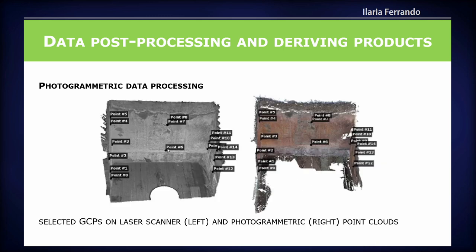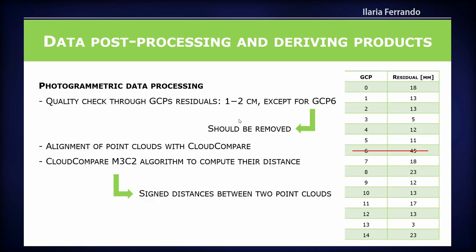Here you can find the location of the chosen points. We chose 15 points distributed across three different rooms to give a robust distribution. These are the points in the laser scanner point cloud and the same points in the photogrammetric point cloud. We checked the results by comparing the two point clouds and obtained about one to two centimeters residuals on individual ground control points, except for ground control point number six, which was removed due to a very high residual compared to the others.